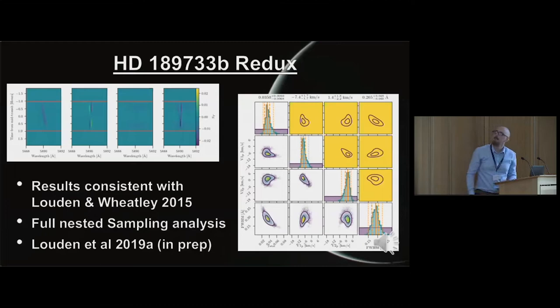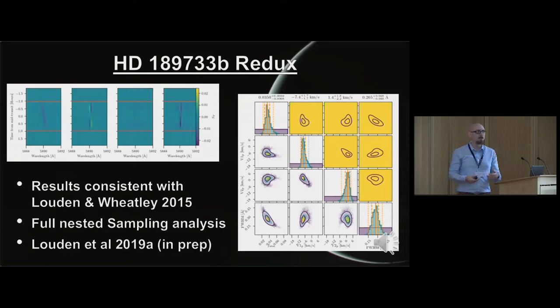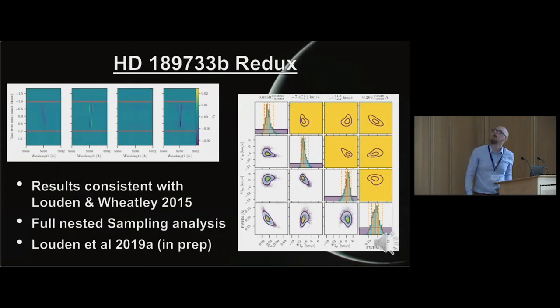I went back and verified this by analysing the same data set from my initial pilot study - HD189733b again. This time, all stellar effects are properly taken into account in ways they weren't necessarily the first time around. I found this did not significantly affect my results - the velocity stayed pretty similar to what I reported before, with a blueshift from the west side and a redshift on the eastern side. I'll be reporting on this further.